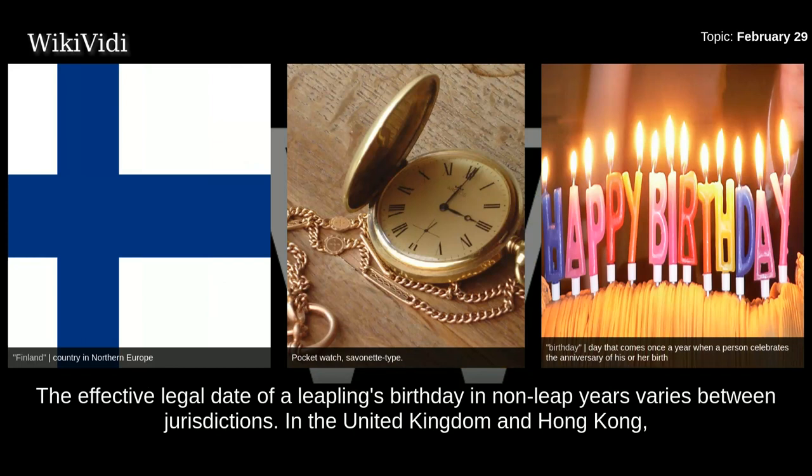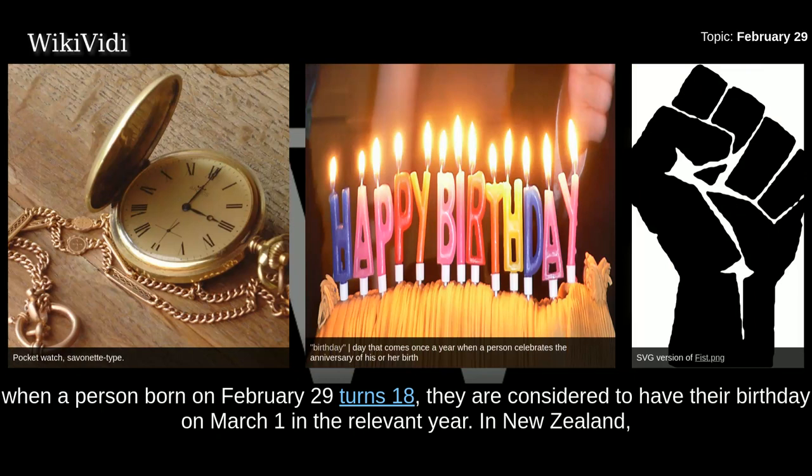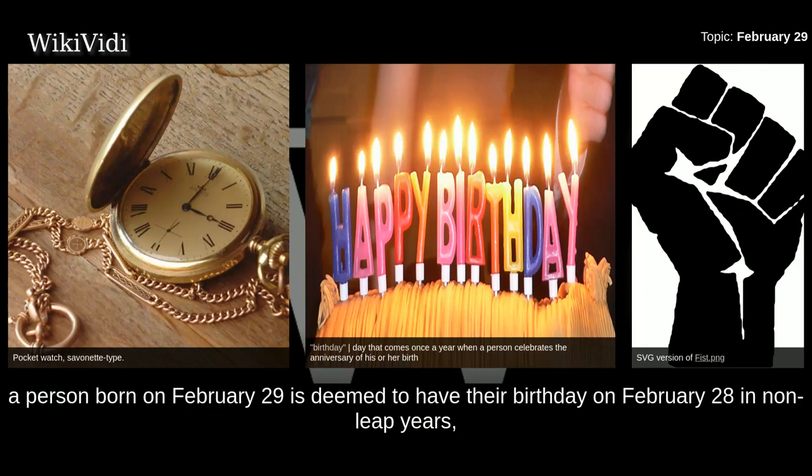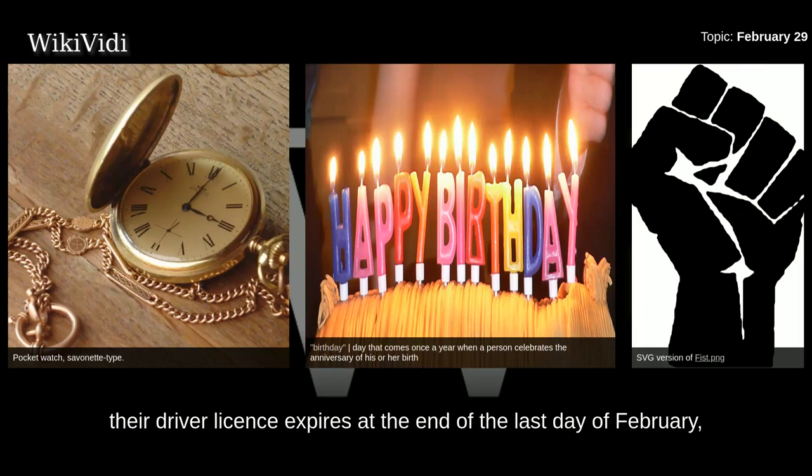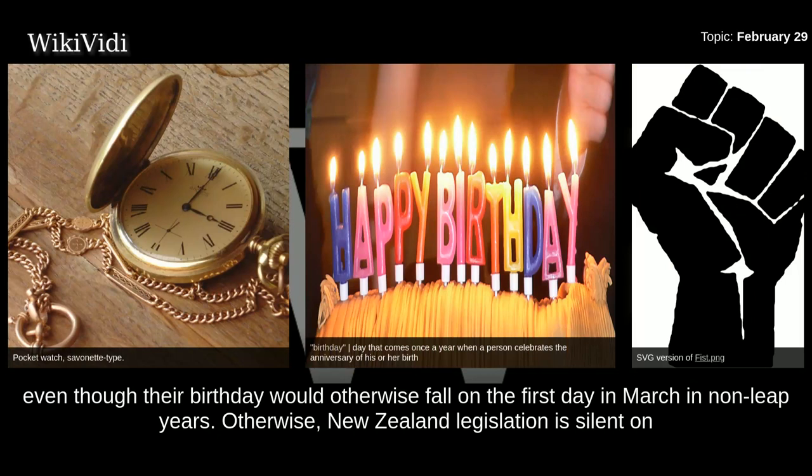The effective legal date of a leapling's birthday in non-leap years varies between jurisdictions. In the United Kingdom and Hong Kong, when a person born on February 29th turns 18, they are considered to have their birthday on March 1st in the relevant year. In New Zealand, a person born on February 29th is deemed to have their birthday on February 28th in non-leap years for the purposes of driver licensing under Section 2 of the Land Transport Rule 1999. The net result is that for drivers aged 75 or over 80, their driver license expires at the end of the last day of February.